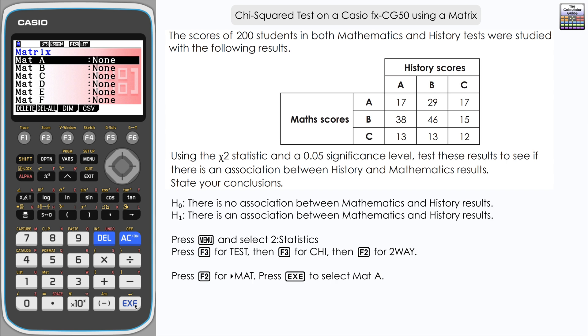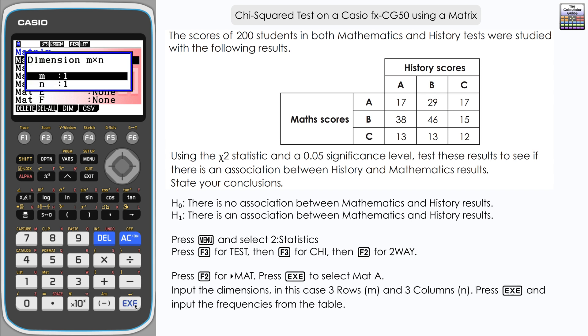If you've got nothing stored, press execute to enter the dimensions for matrix A. Remember this is rows and then columns. We've got three by three on this one, so three rows and three columns. Enter three and three, press execute, and now we're on to the input screen.